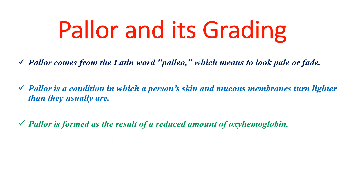Pallor and its grading. Pallor comes from the Latin word 'palo', which means to look pale or faint. Pallor is a condition in which a person's skin and mucous membranes turn lighter than they usually are. This is due to a reduced amount of oxyhemoglobin.